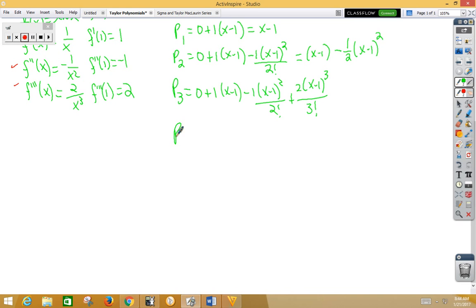Our third degree Taylor polynomial, we would have our x minus 1, we would have our negative 1 half x minus 1 squared. 3 factorial is really the same thing as 6, so we could reduce that fraction to 1 third x minus 1 cubed. Now we have our first four Taylor polynomials.